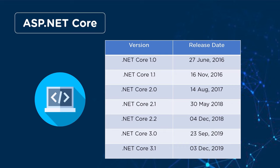After 2.0, .NET Core 2.1 was released on May 30th, 2018, with features to support Windows applications. Then on December 4th, 2018, .NET Core 2.2 was released. After 2.2, version 3.0 was released on September 23rd, 2019. Then on December 3rd, 2019, the current version, .NET Core 3.1, was released with long-term support features for applications.